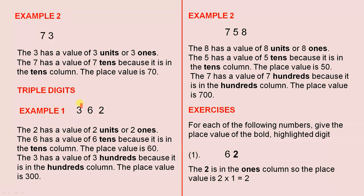Triple digits — that means we have three single digits. The 2 has a value of two ones. The 6 has a value of six tens, because it is in the tens column — the value is 60, and six tens are 60. The 3 has a value of three hundreds, because it is in the hundreds column. The place value is 300. Three times 100 is 300.